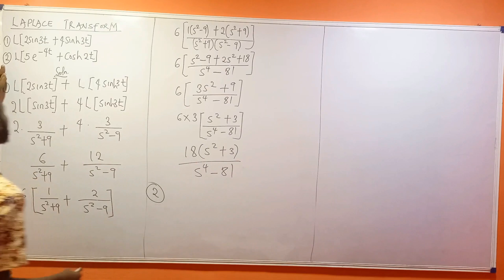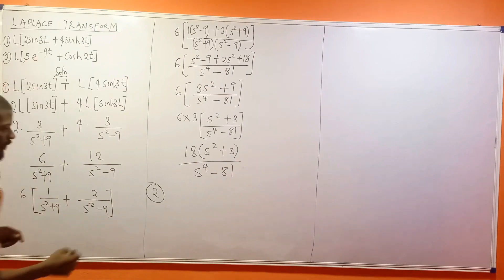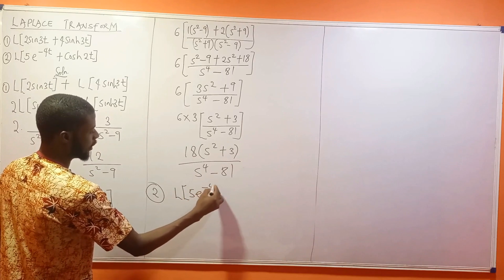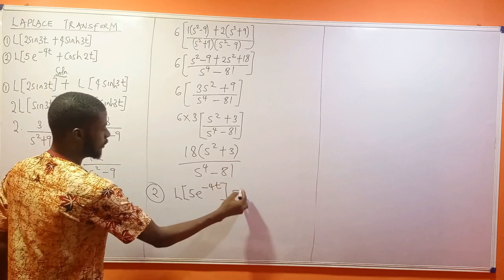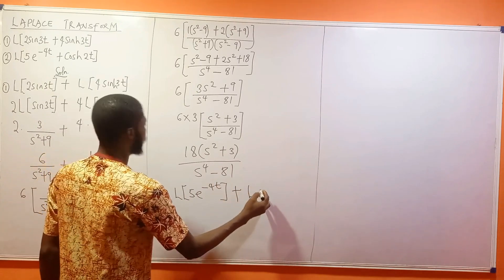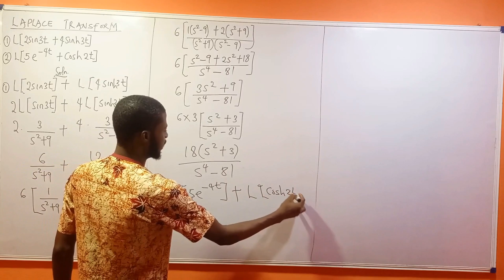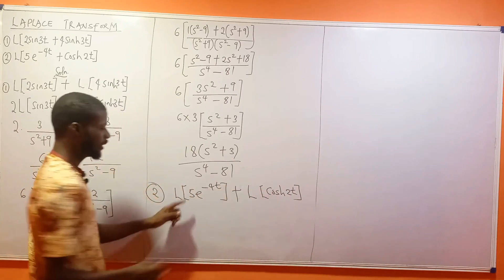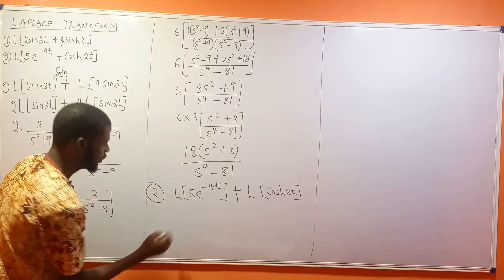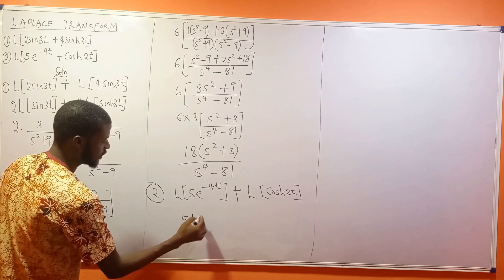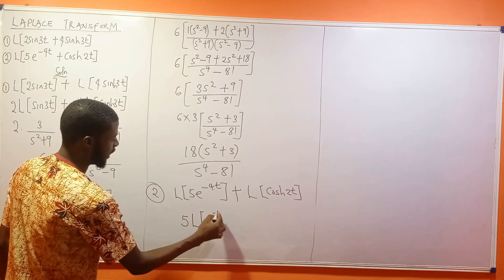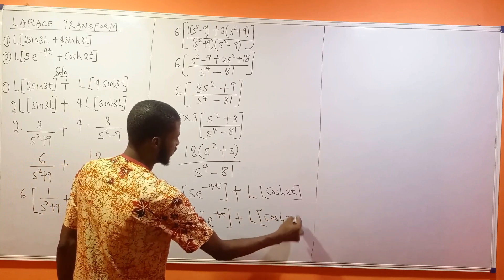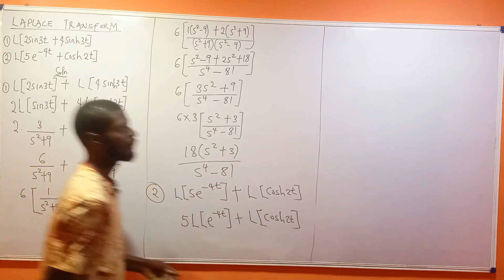For Problem 2, the Laplace transform of 5e^(-4t) plus cosh(2t). This equals the Laplace transform of 5e^(-4t) plus the Laplace transform of cosh(2t). The 5 is a constant, so we factorize it out: 5 times the Laplace transform of e^(-4t), plus the Laplace transform of cosh(2t).